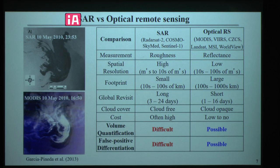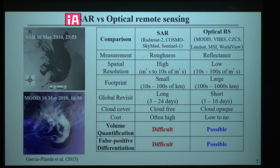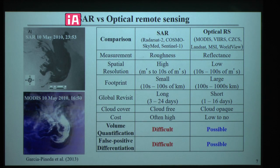This table shows the detailed comparison between SAR and optical remote sensing. SAR satellites include Radarsat and others. SAR measures surface roughness — oil slick on the ocean surface dampens capillary waves and short gravity waves, reducing the radar backscattering coefficient, resulting in a dark spot on SAR imagery. Optical remote sensing includes sensors like MODIS, VIIRS, CZCS, Landsat, MSI, and WorldView — it measures spectral reflectance, so anything that changes spectral reflectance will be measured.